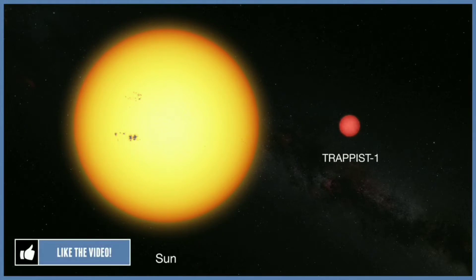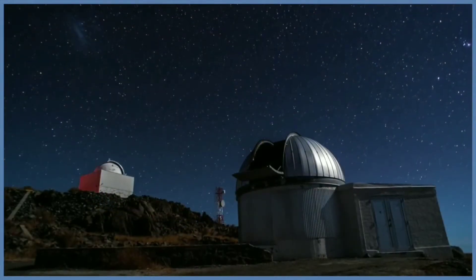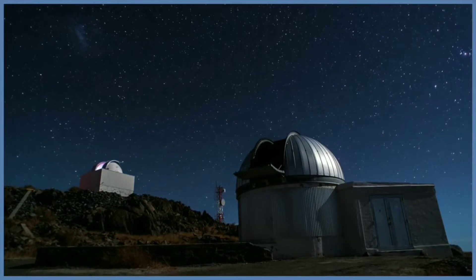This star is located 40 light-years away from Earth in the constellation of Aquarius. Because they are located outside of our solar system, these planets are scientifically known as exoplanets.